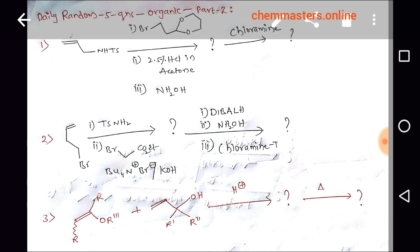Third question: vinyl ether reacting with allylic alcohol in H+ (acid condition). What is the product, and then with further heating, what is the final product?